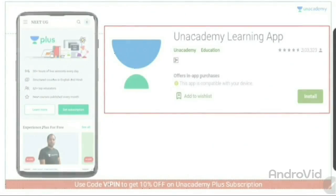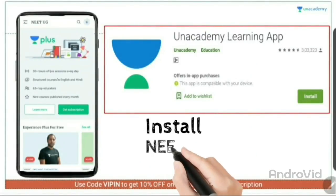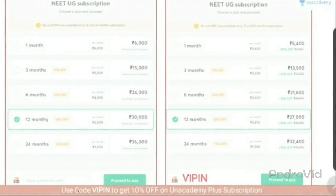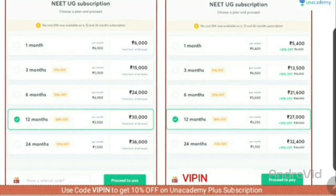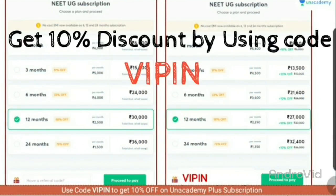You can also get connected to us via Unacademy's learning app and this app is freely available on Google Play Store. You just have to install this app, go to the Neet UG section and click on get subscription. You will be getting all our subscription packages on your screen. I will recommend you guys that you can use 1-2-year subscription pack and use the Vipin code for 10% discount.